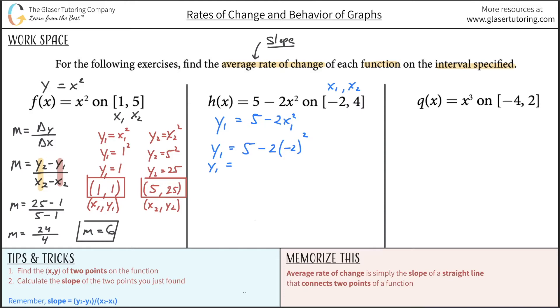So Y1 will equal 5 minus 2 times negative 2 squared. So Y1 will equal 5 minus - negative 2 squared is positive 4, positive 4 times 2 is 8. So this is really 5 minus 8. So Y1 equals negative 3. So now I realize that my X1 value of negative 2 correlates with my Y1 value of negative 3.